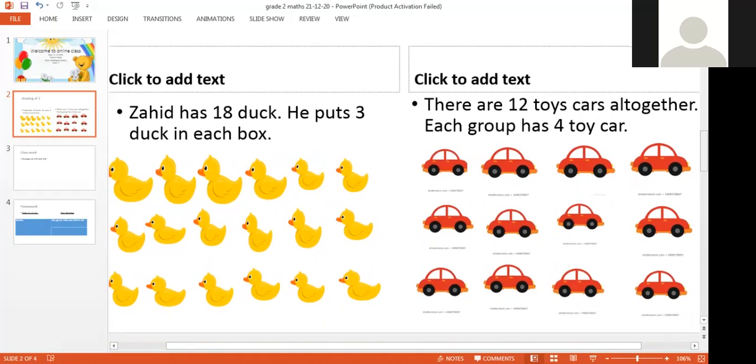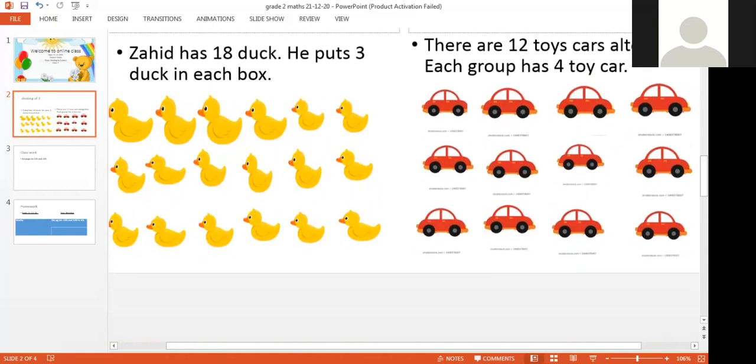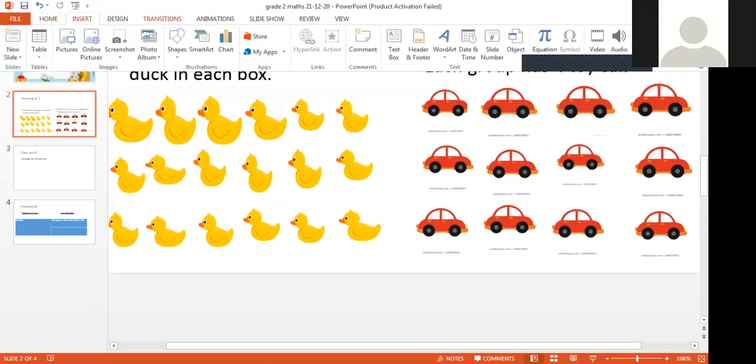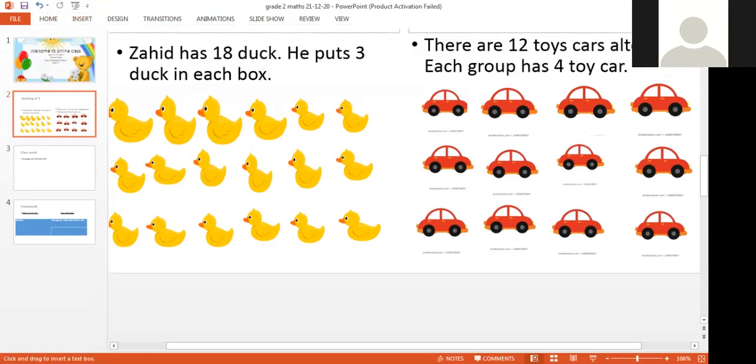Now listen to me carefully. Zahid has 18 ducks. He puts 3 ducks in each box. In each box, Zahid has 3 ducks. Zahid is having 18 ducks. How many ducks have Zahid? 18. He puts 3 ducks in each box. Like this.